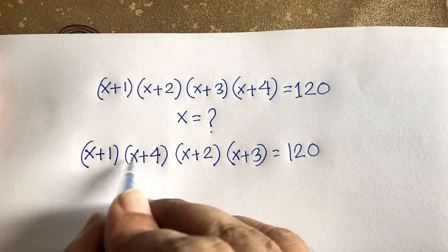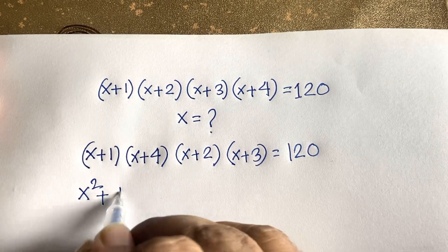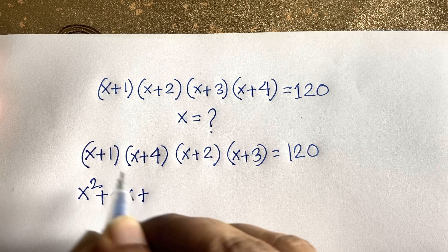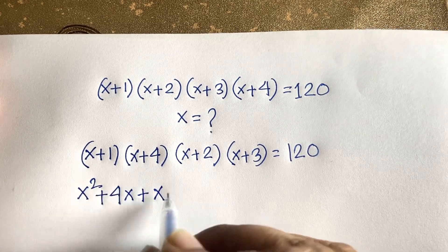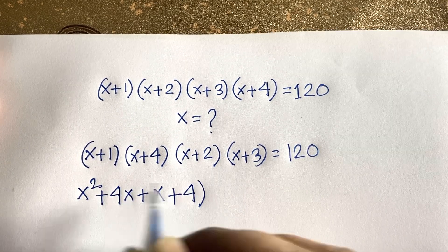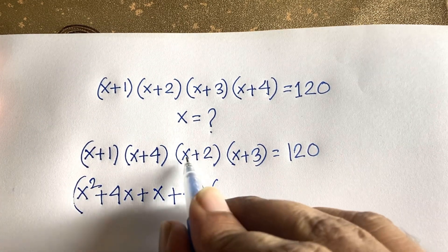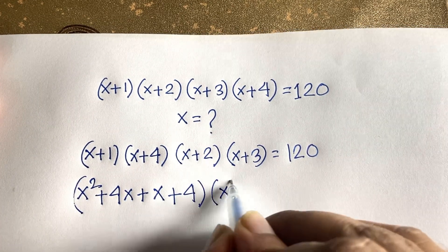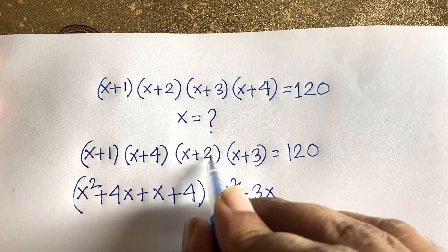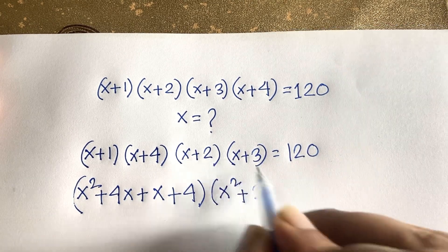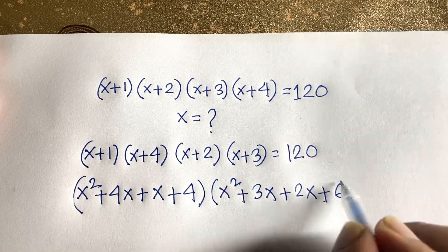Now I expand (x+1)(x+4): x times x is x², x times 4 is 4x, 1 times x is x, and 1 times 4 is 4. Then I expand (x+2)(x+3): x² + 3x + 2x + 6. So we get (x² + 5x + 4)(x² + 5x + 6) = 120.